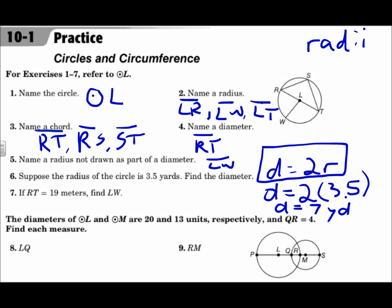Number seven: if RT equals 19 meters, find LW. RT is a diameter; LW is a radius. Using the formula D = 2R, the diameter is 19, so 19 = 2R. Divide both sides by two and R is 9.5 meters.